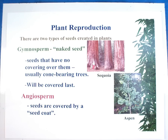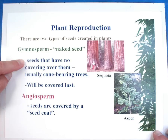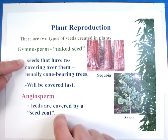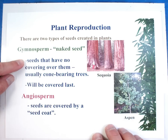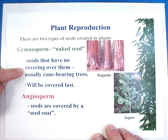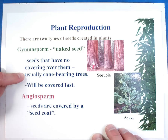Gymnosperms and angiosperms — it's really more definitions than anything. A gymnosperm has a naked seed. Seeds that do not have a covering over them, usually cone-bearing. You've probably seen that in pine trees or sometimes in Christmas trees that you buy at Christmas — they have little cones in them, and that's where the seeds are formed inside these trees.